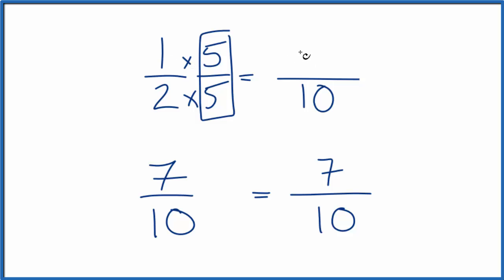1 times 5, that gives me 5, and now I can compare these two fractions, 1 half and 7 tenths. 7 is larger than 5, so 7 tenths is larger than 1 half. You could also find the difference between 1 half and 7 tenths. 7 tenths minus 5 tenths, that gives you 2 tenths or 1 fifth.